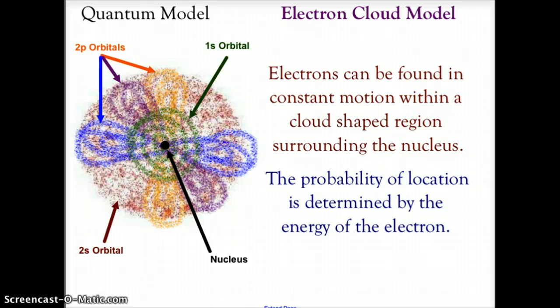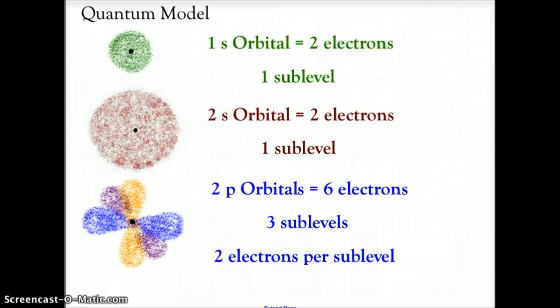What we're going to look at is that the quantum model allows us to have orbitals that are different sizes and shapes and all of the elements will have a 1s orbital.